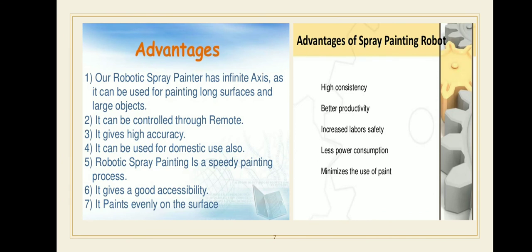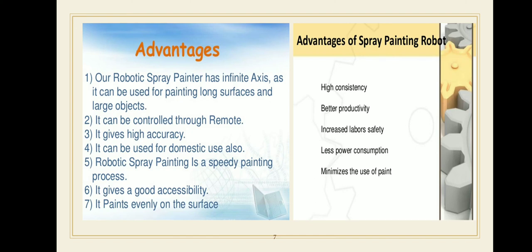The advantages of the spray painting robot include: high consistency, better productivity, increased labor safety, less power consumption, and minimizing the use of paint. A robotic spray painter has infinite access, as it can be used for painting long surfaces and large objects. It can be controlled remotely, gives high accuracy and high performance compared to manual spray painting, and can be used for domestic use. Robot spray painting is also a faster process, requiring less time than manual spray painting.